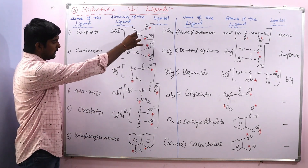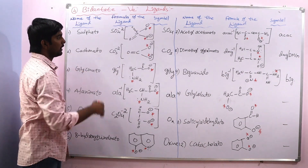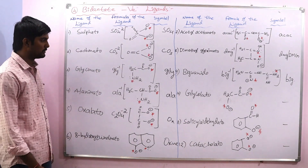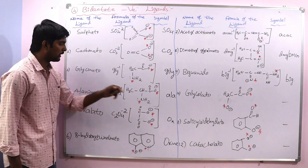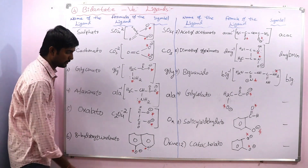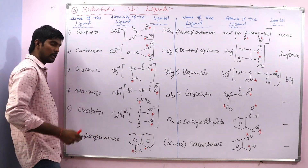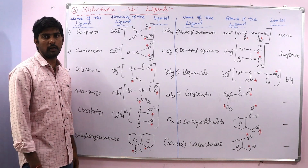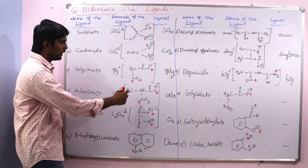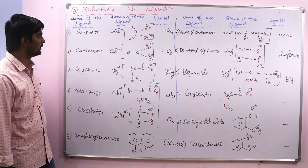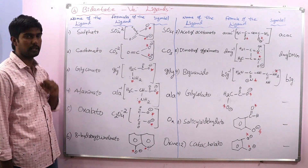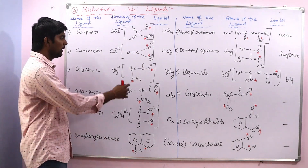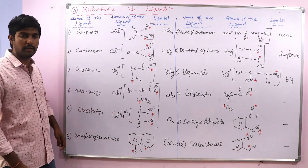In summary: in sulphate and carbonate, two oxygens are donor atoms. In glycinate and alaninate, one oxygen and one nitrogen are the donor atoms. In oxalate, two oxygens are donor atoms. In 8-hydroxyquinolinate, one nitrogen and one oxygen are donor atoms. Generally, if the donor atoms are the same, they are called symmetrical bidentate ligands. If the donor atoms are different, they are called unsymmetrical bidentate ligands.